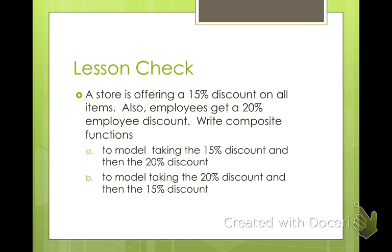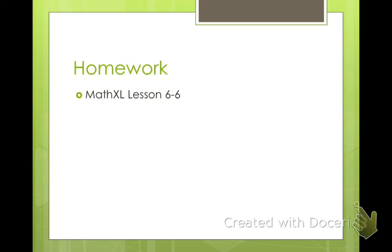Alright, so this is your lesson check. A store is offering a 15% discount on all items, and all employees get a 20% employee discount. Write a composite function to model taking off the 15% first then the 20%, and another model that takes off the 20% first then the 15%. Compare which gives you a better deal, and discuss it with your partner. Your homework is to do lesson 6-6 on Math Excel. Hope you have a great night.